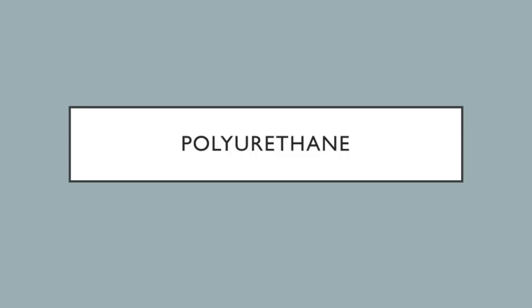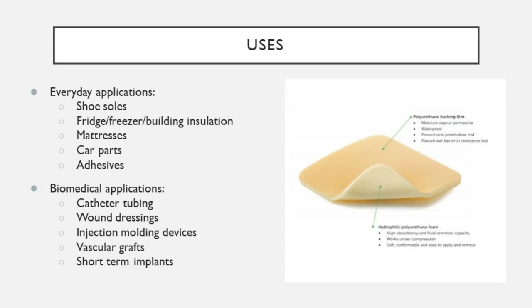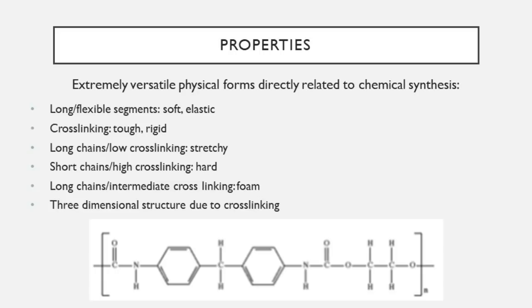Moving on to specific polymers — the first is polyurethane. Industrially, polyurethanes are used in adhesives, coatings, sealants, rigid and flexible foams, and textile fibers. In medicine, their excellent mechanical properties, stability, and biocompatibility give them a wide variety of applications, including artificial pacemaker lead insulation, catheters, vascular grafts, heart assist balloon pumps, artificial heart bladders, and wound dressings.